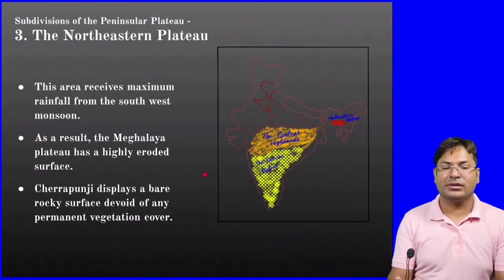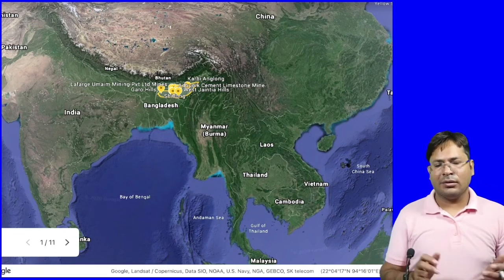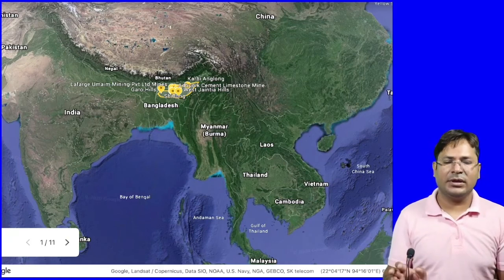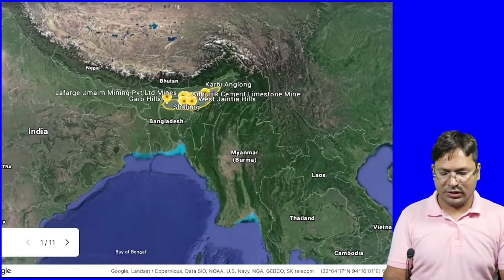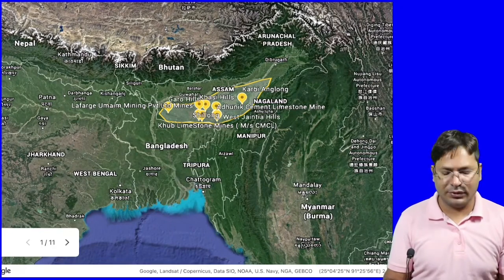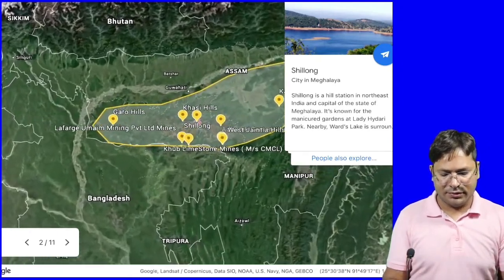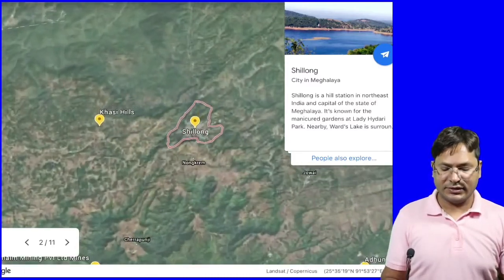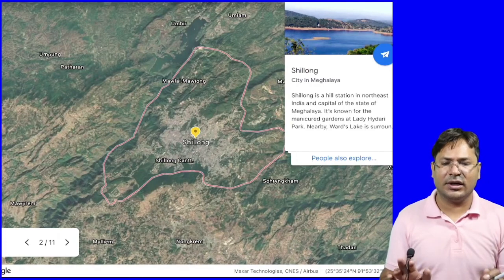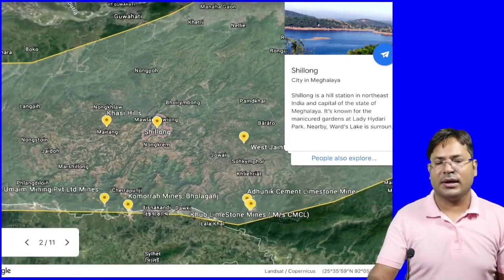Now let's understand this plateau with the help of Google Earth and some pictures. This is the location on the India map of this plateau. The first location is Shillong — we have already studied that this plateau covers the Shillong and Karbi Anglong area. Shillong lies in the western part of this area, and here it is on the map.